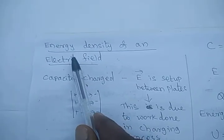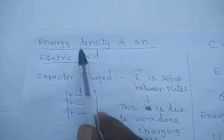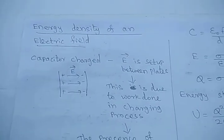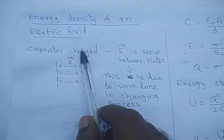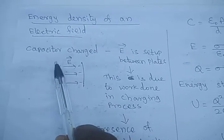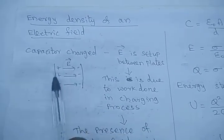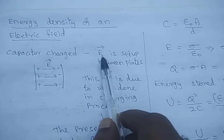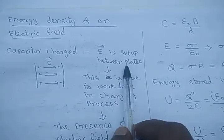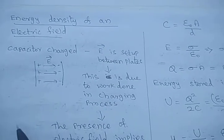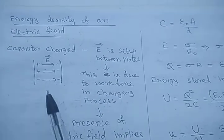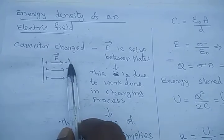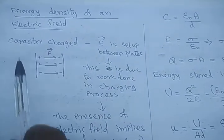Dear students, in this session we are going to see about energy density of an electric field. Whenever the capacitor is charged, there is a charge present in the capacitor. If there is a charge present, there must be an electric field set up between the plates. The electric field direction is from positive charge to negative charge.